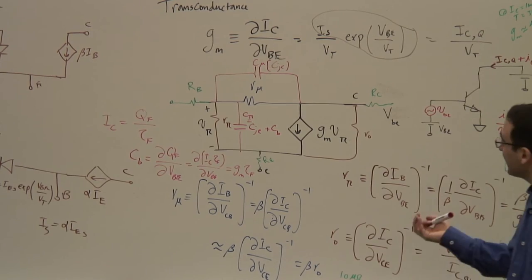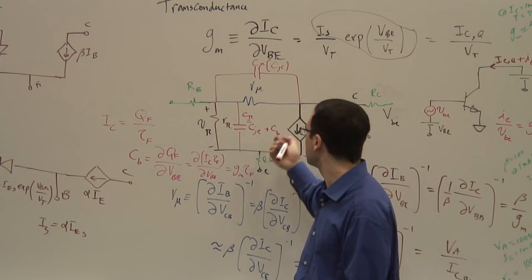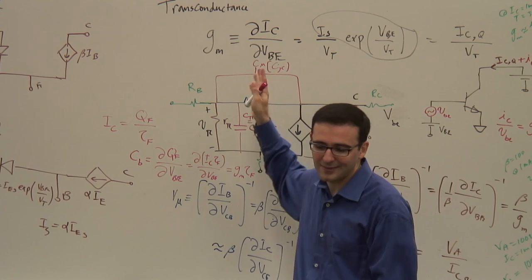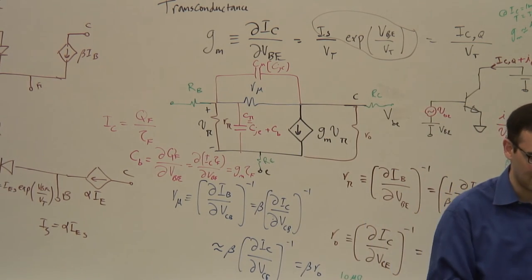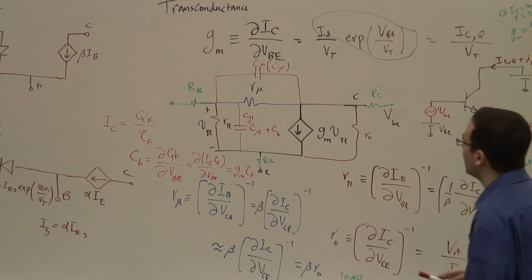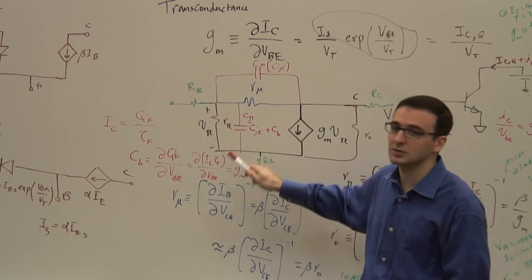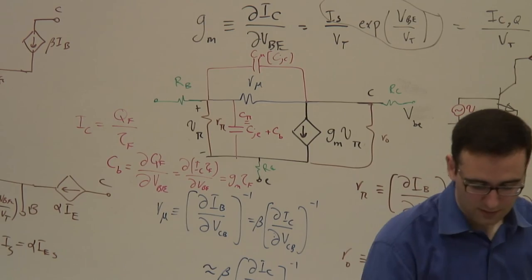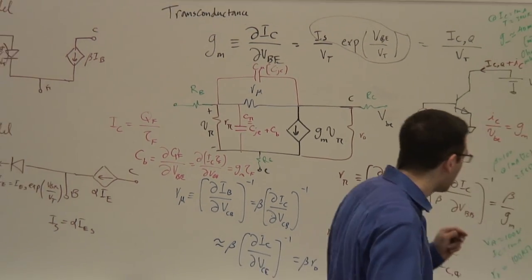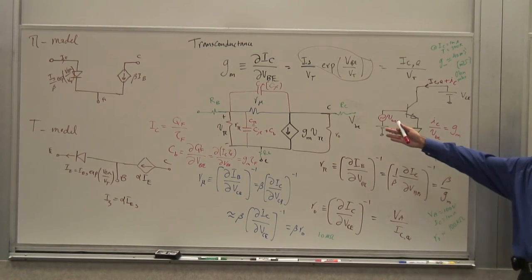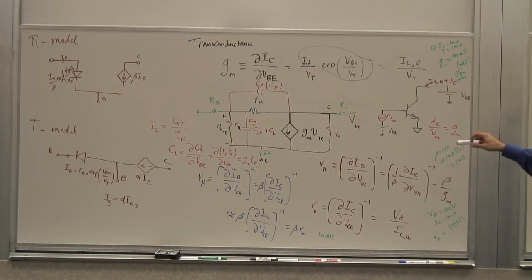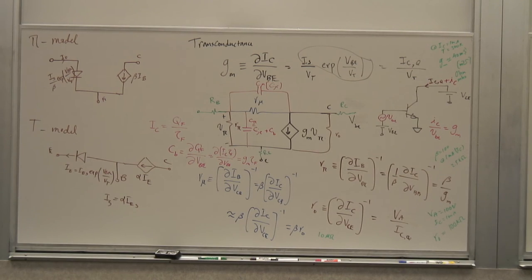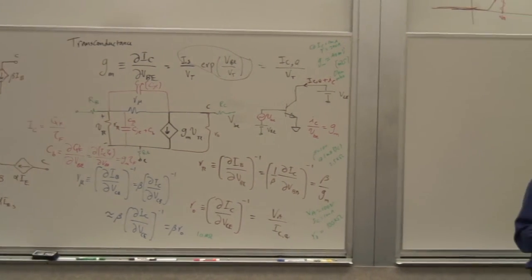Any questions? Now, typically in a standard bipolar transistor under normal current conditions, Cpi is larger than Cmu — often by about an order of magnitude. But it turns out Cmu is in many cases even more important than Cpi. We'll talk about that when we get into transistor dynamics. Now, let me ask: what is the fastest, highest frequency I can use a transistor at, and how would you determine that?